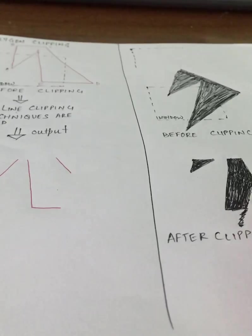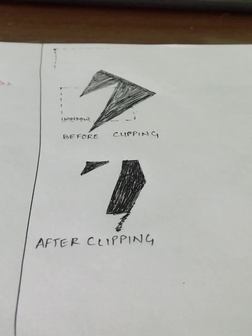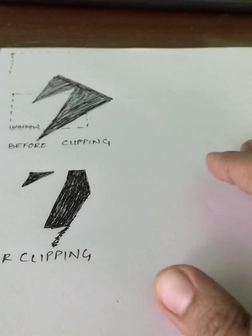The output of a polygon clipper should be a sequence of vertices that defines a clipped polygon boundary. That's what I wanted to tell you all.